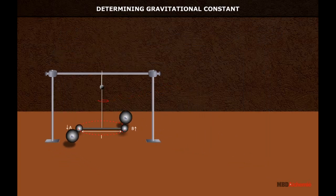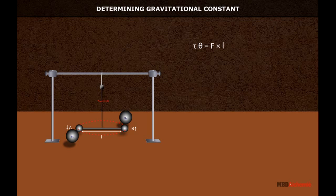Mathematically, tau into theta is equal to F into L. On solving it, we can calculate the gravitational constant as G is equal to tau theta D square upon M M L.